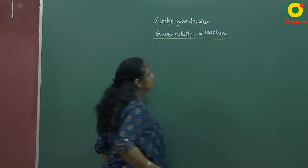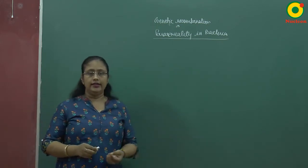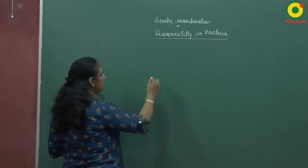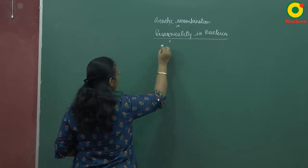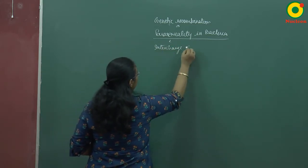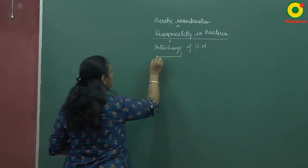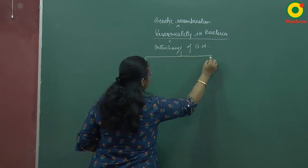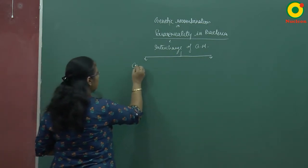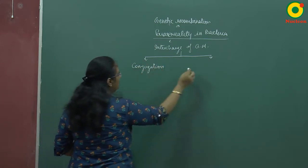The most important characteristic of genetic recombination is the interchange of genetic material. The interchange of genetic material occurs by two methods: either conjugation or exotic methods.